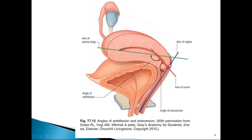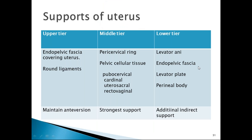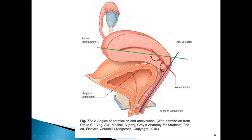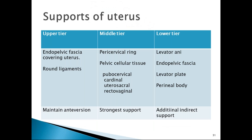The uterus is anteverted and anteflexed. Anteversion is the angle between the axis of the cervix and the axis of the vagina. Anteflexion is the angle between the axis of the cervix and the axis of the uterine body. This is the normal anatomical position of the uterus.